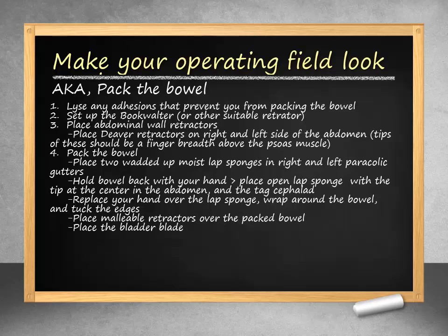Next, your hand, fanned out, will hold back the bowel while an open lap sponge with the tip in the center is placed over the top of your hand with the other hand. The back hand holding the bowel is then removed, leaving the open lap sponge directly against the bowel. The ends of the lap sponge are then tucked against the abdominal cavity. A large malleable retractor is then placed over the bowel and attached to the Bookwalter. A second medium malleable retractor may be needed, and further wadded-up lap sponges may be needed depending on the patient's body habitus. A bladder blade is finally placed.